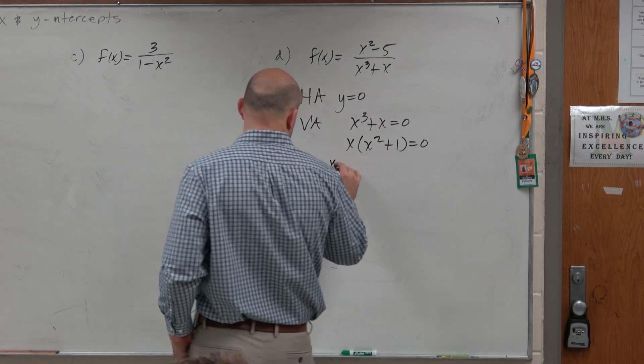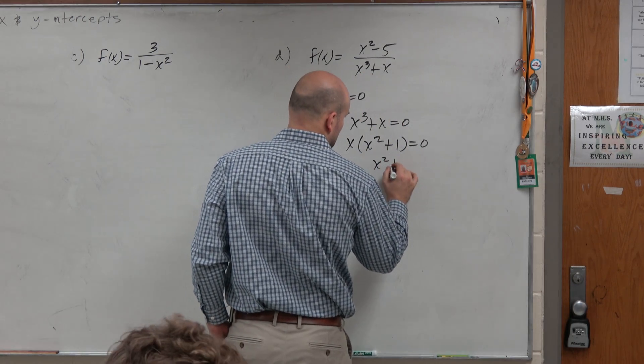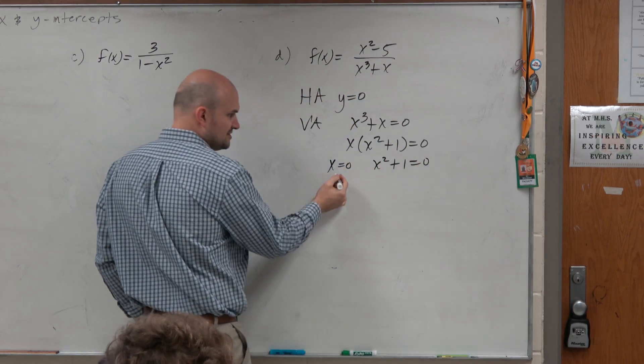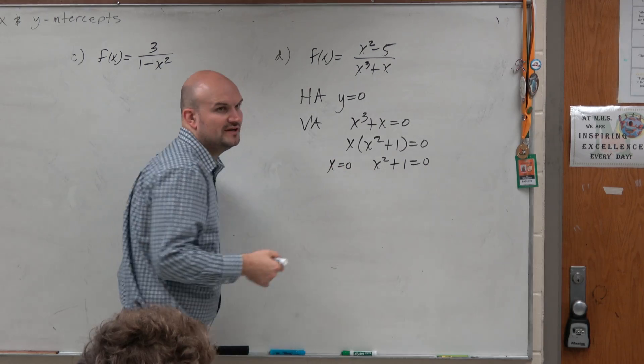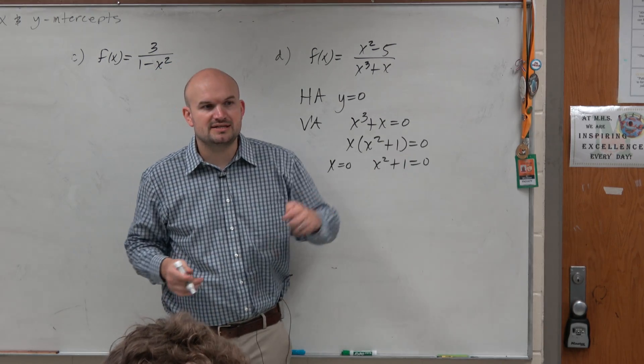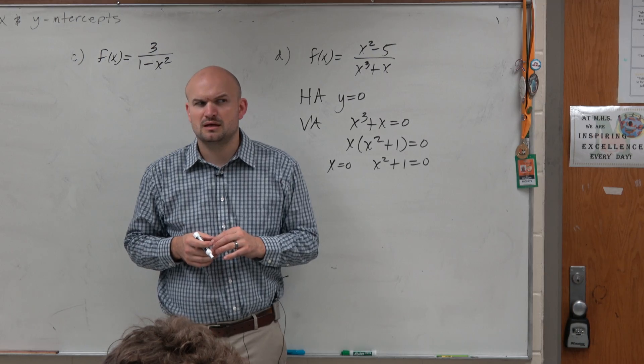Now I can use my zero product property. x equals 0. What happens when I solve here? Subtract the 1 and take the square root. What do I get? i.